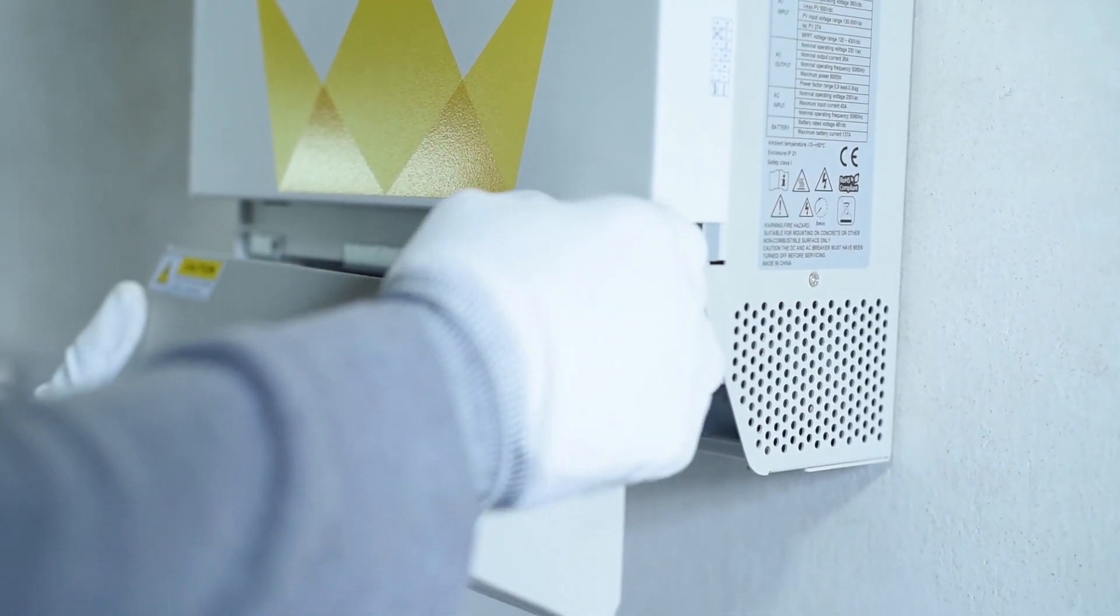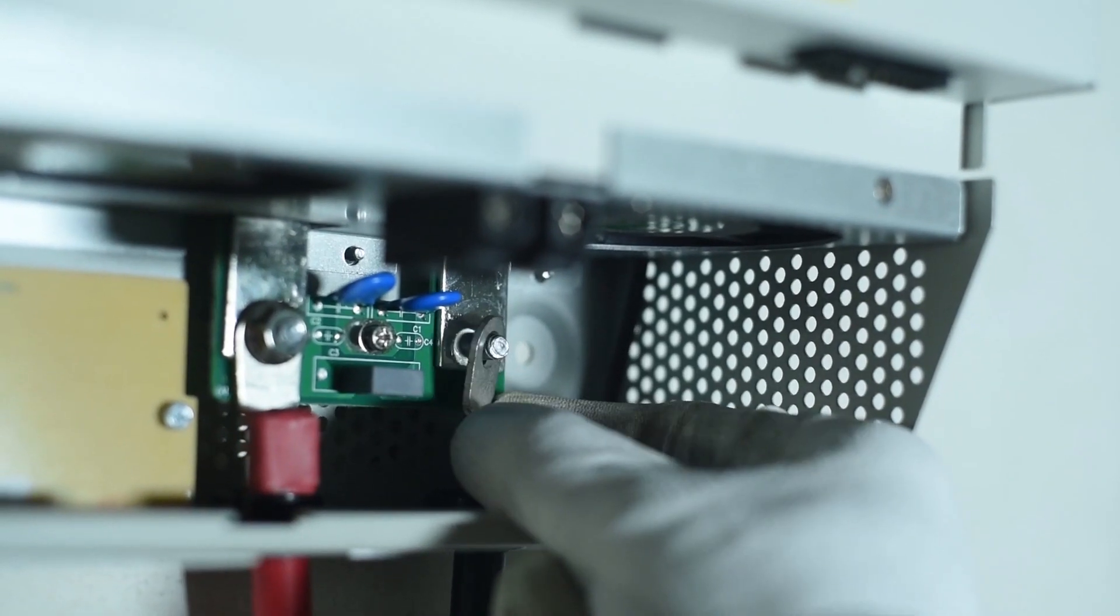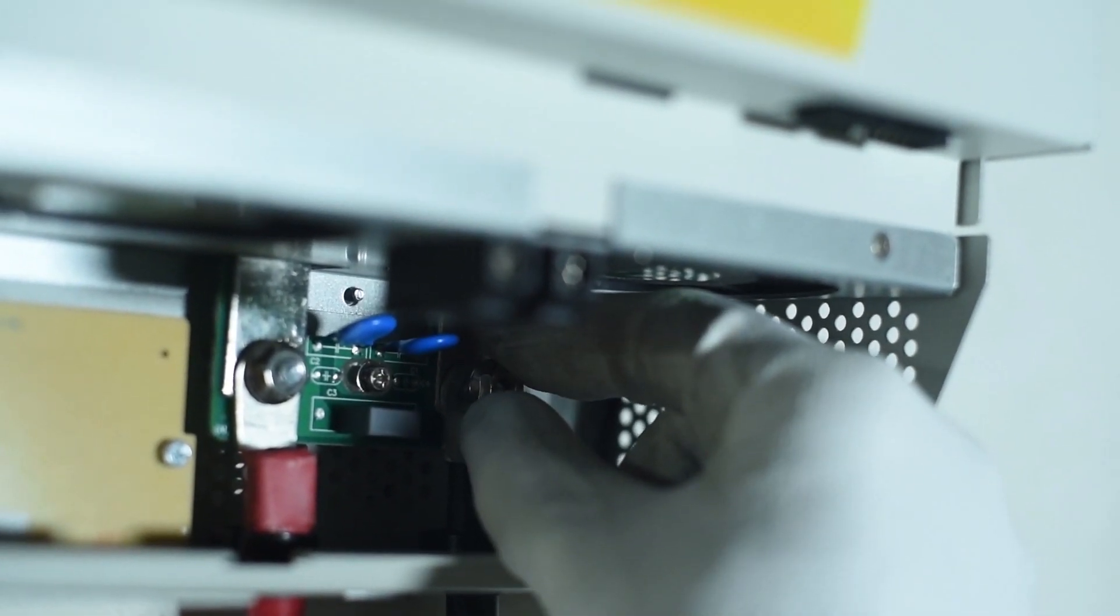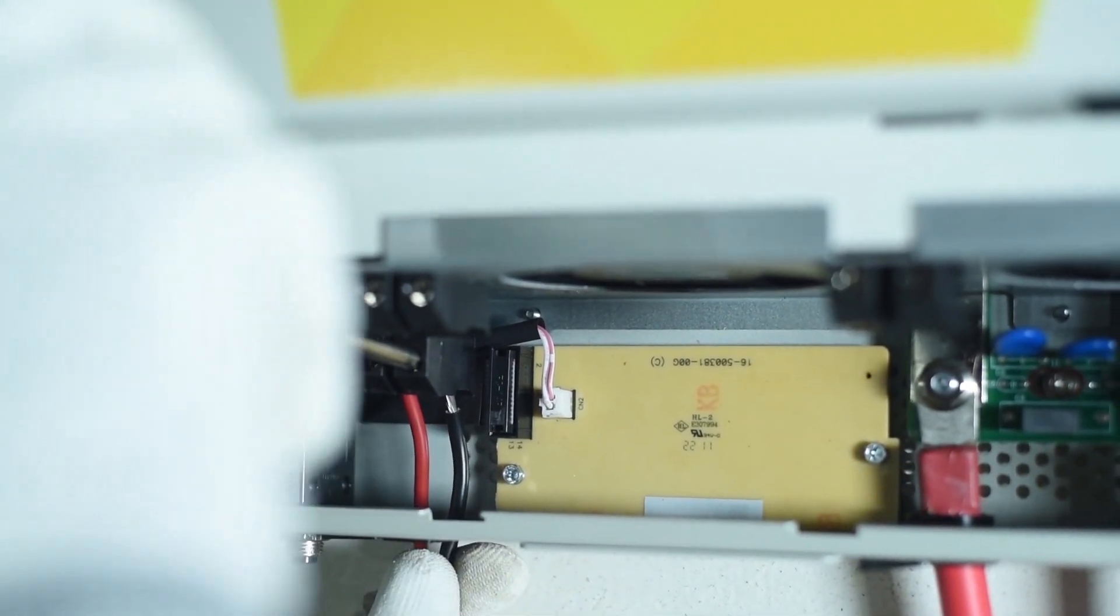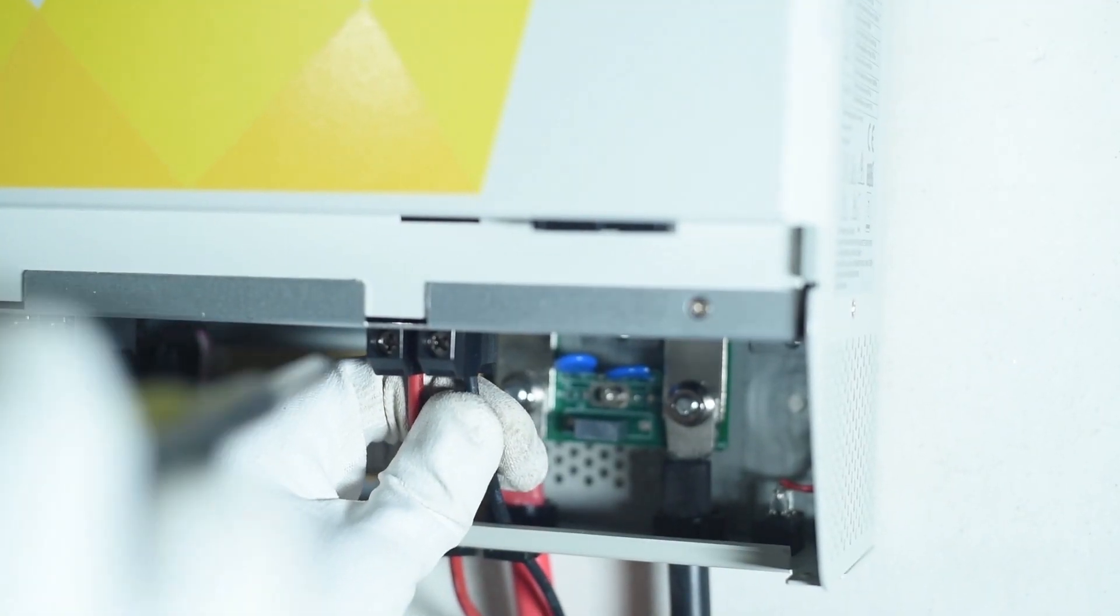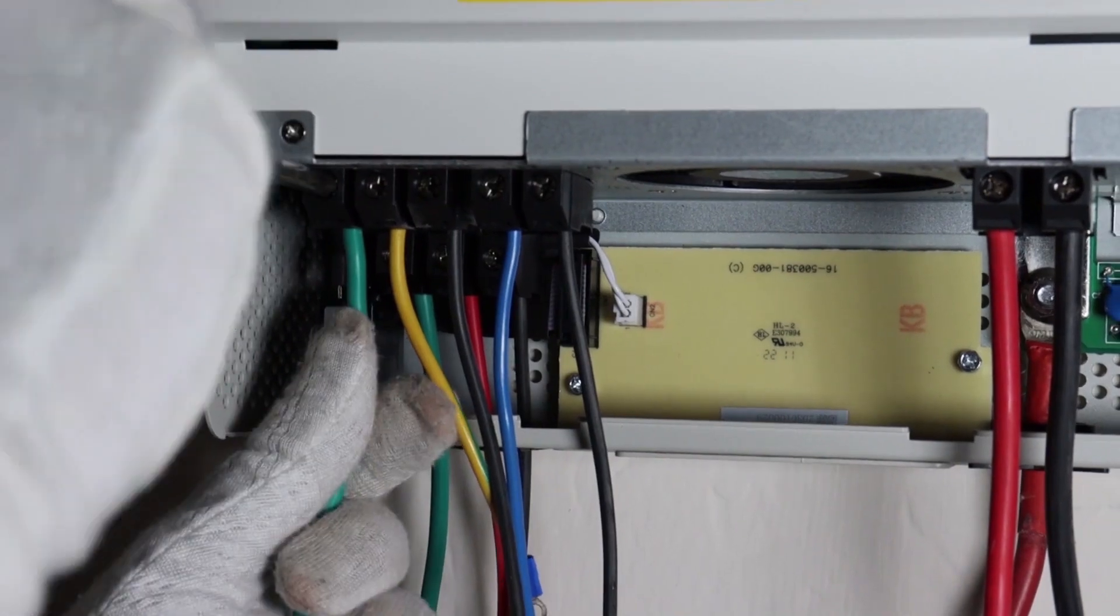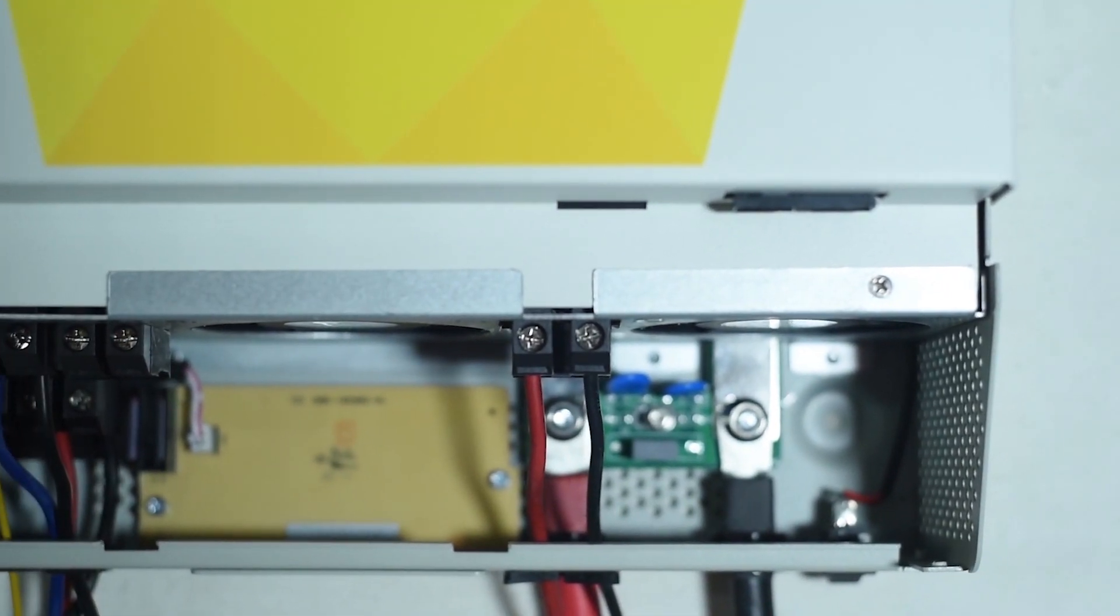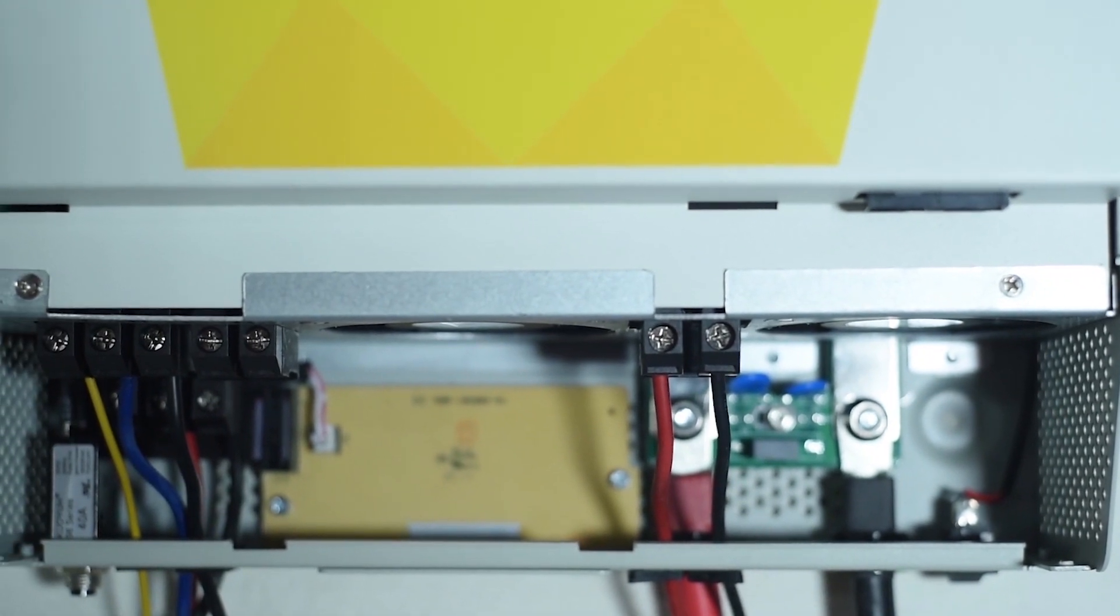Connect the battery making sure the positive and negative poles are correct. Connect AC input, AC output, then PV input. Connect the inverter to earth. Verify input AC voltage and frequency, PV input voltage, and battery voltage before energizing the unit.